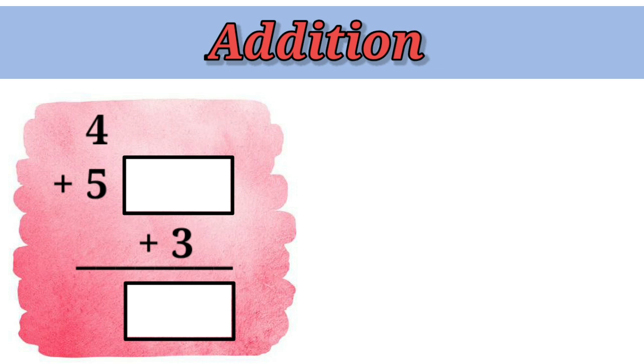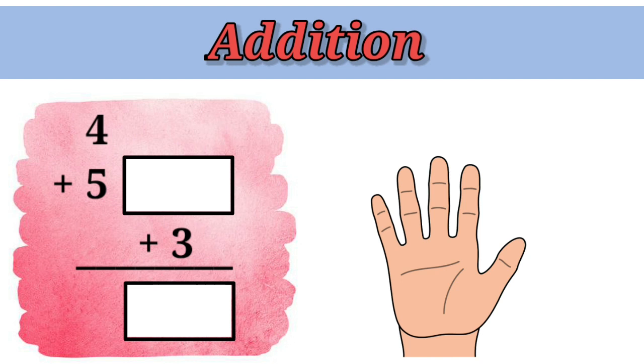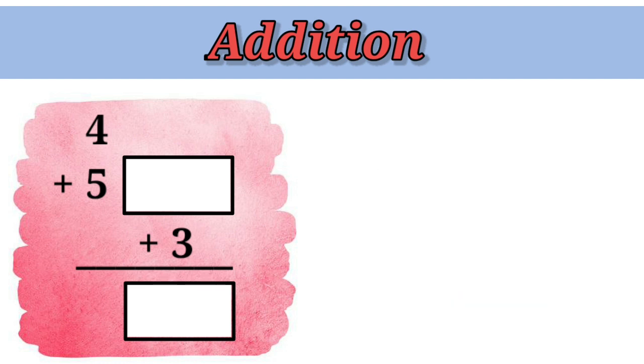Now, let's keep 4 in our mind and count 5 with our fingers. 4, 5, 6, 7, 8, 9. So, 4 plus 5 is 9. Let's write 9 in the first box. Now, we have to add 9 with 3.